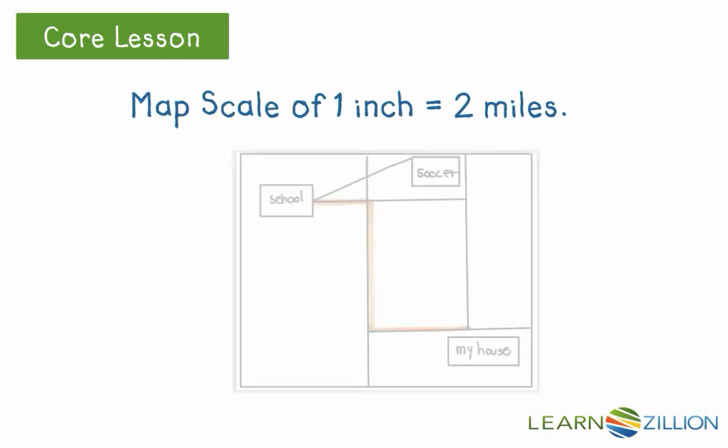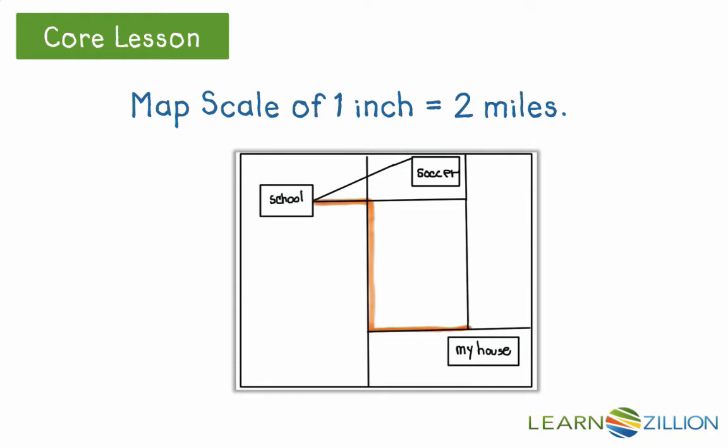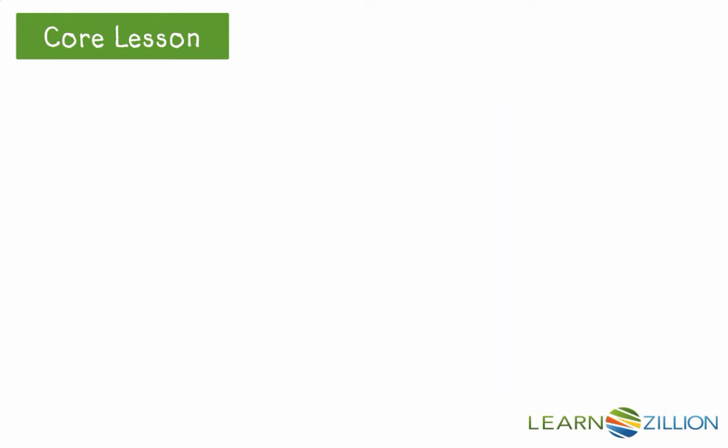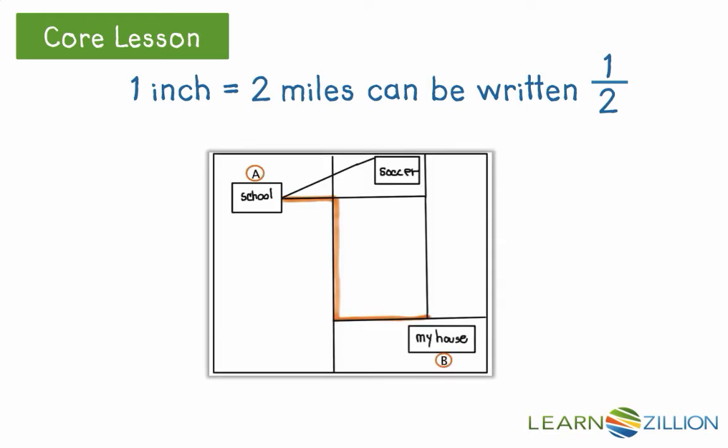This map has a scale of 1 inch equals 2 miles. Let's use the map scale to find out how far it is from my house to point A to point B. The map scale is 1 inch on the map equals 2 miles in actual distance. This can be written as a 1 to 2 ratio.